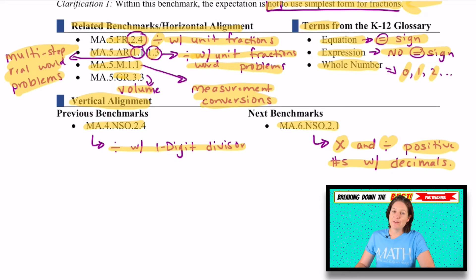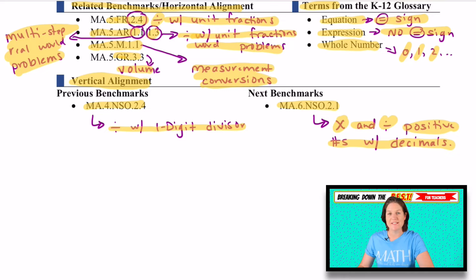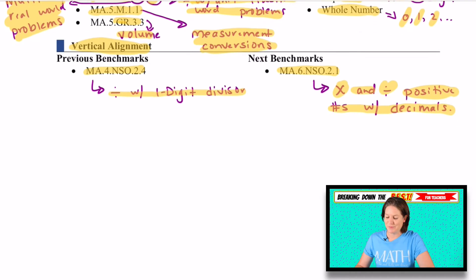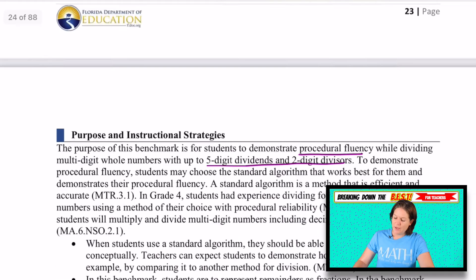And then in sixth grade, we are multiplying and dividing positive numbers with decimals, which kind of used to be a fifth grade standard with common core. And now they've moved it to sixth grade. We do get into a little bit of multiplying and dividing decimals this year, but in a different way than what we've seen in the past.